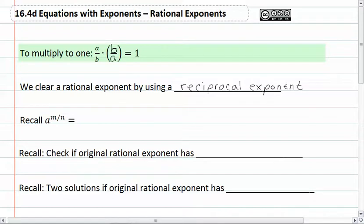Now recall by definition that a to the m/n power is the nth root of a raised to the m power, where n is our index or the root, and m is our exponent.